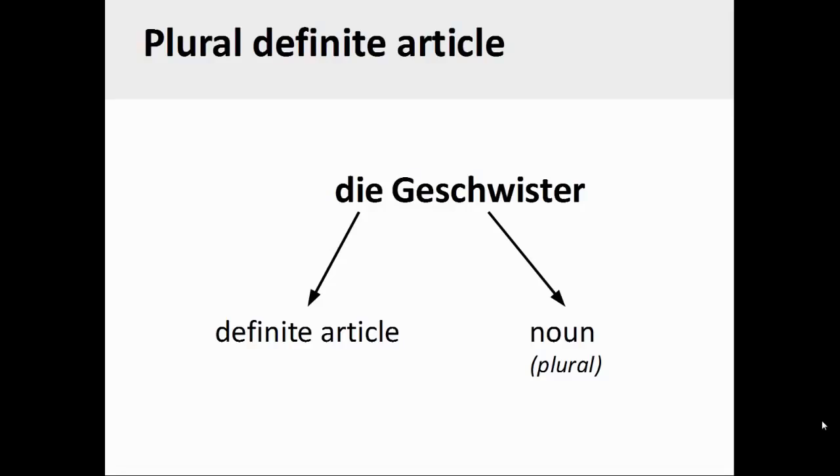Finally, the German noun Geschwister, meaning siblings, refers to a group of people, and therefore is automatically a plural noun. Its definite article will always be die.